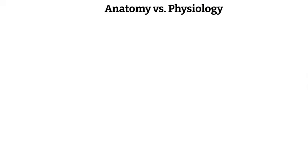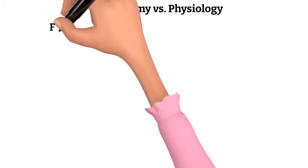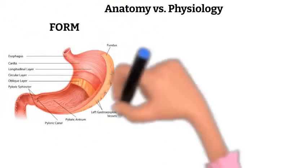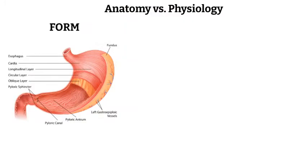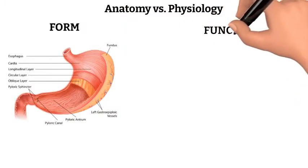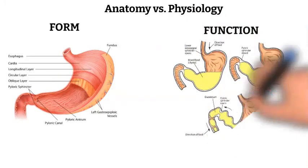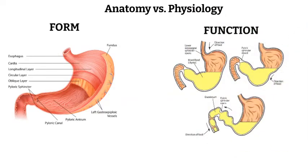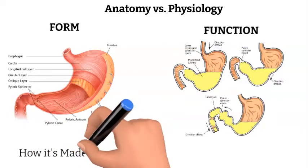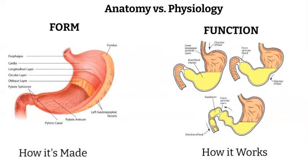The first thing I want to talk about is what exactly does the term anatomy and physiology mean? Anatomy is all about form or the structure of living things, where physiology is about function. When looking at physiology, you'll be looking at the functions of cells and organs, rather than how they're made. So anatomy is about how it's made and physiology is about how it works.